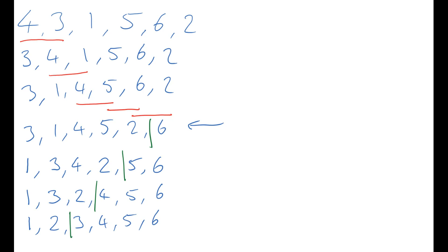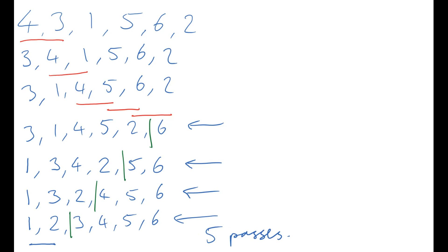We know that the numbers are in the correct order because we can see that, but we still have to go through the process with the algorithm. So the last stage is to compare the one and the two — they're in the correct order. I've reached the end of my list and we haven't had to make a swap, so we know that we can stop at this stage. If we compare how many passes we've made: one, two, three, four, and that final one where I compared the one and the two — we made five passes through to get our numbers in the correct order.